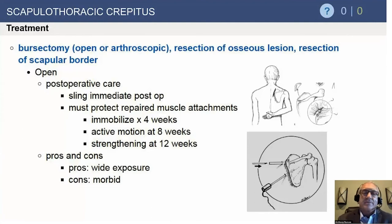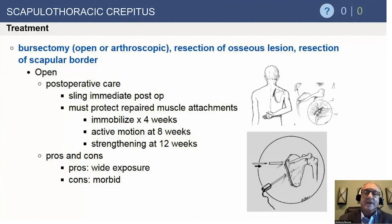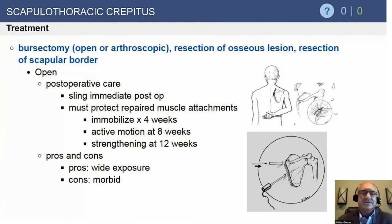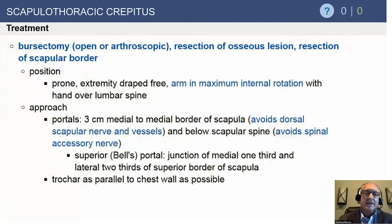After surgery, patients are put in a sling. Most people follow a conservative management protocol — there's no reason to rush. Gentle activities begin around four weeks, active motion around six weeks, and strengthening between eight and twelve weeks, depending on the patient's symptoms.